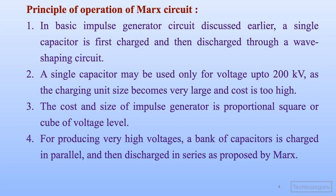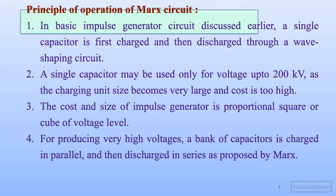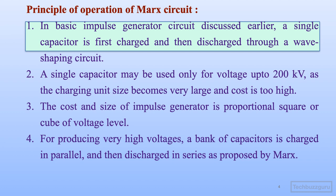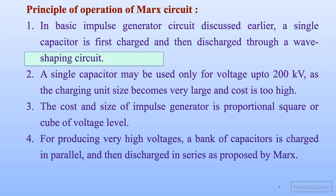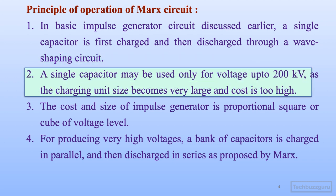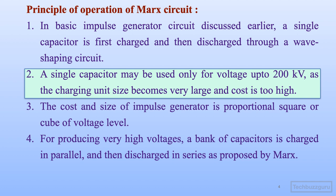We'll first take up the principle of operation of the Marx circuit. Before we move to the multi-stage impulse generator, let us recollect that in the basic impulse generator circuit discussed earlier, usually a single capacitor is first charged and then discharged through a wave shaping circuit. Such a circuit with a single capacitor is suitable only for voltages up to 200 kV, as the charging unit size becomes very large and cost is also too high for higher voltage levels.